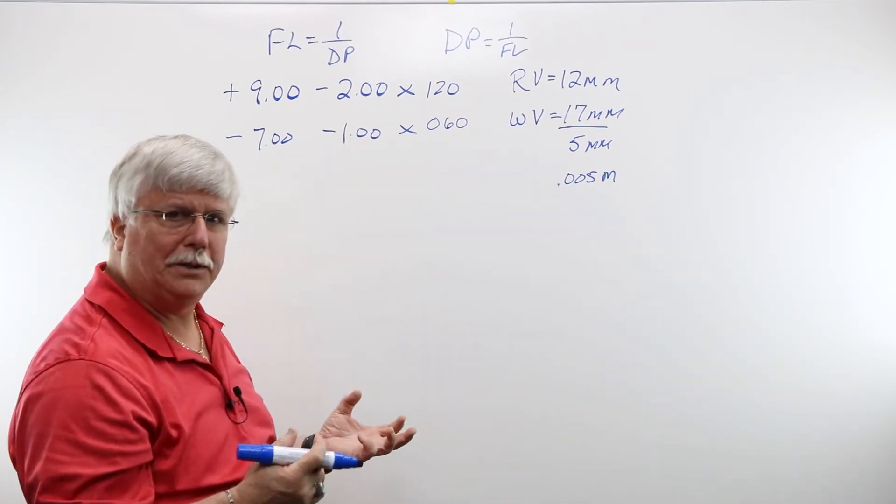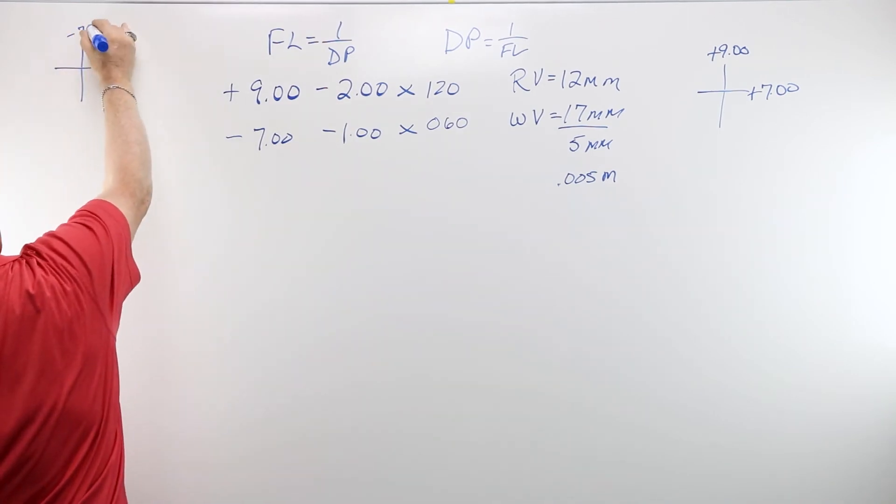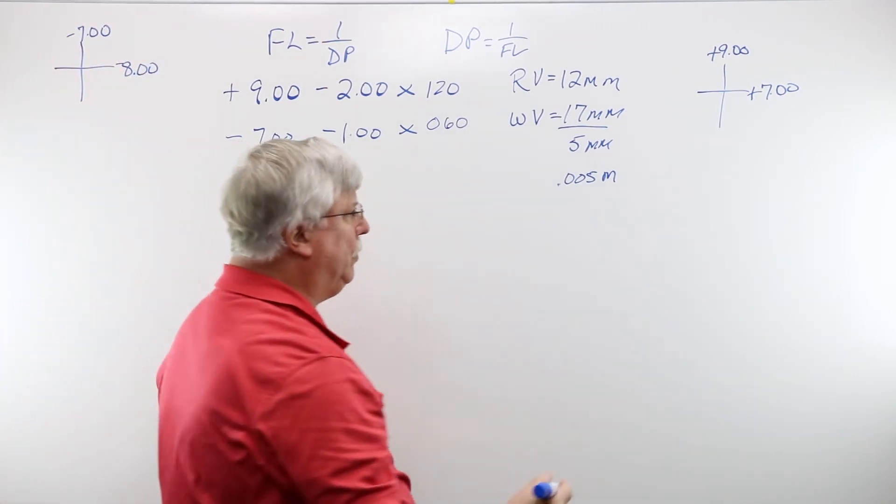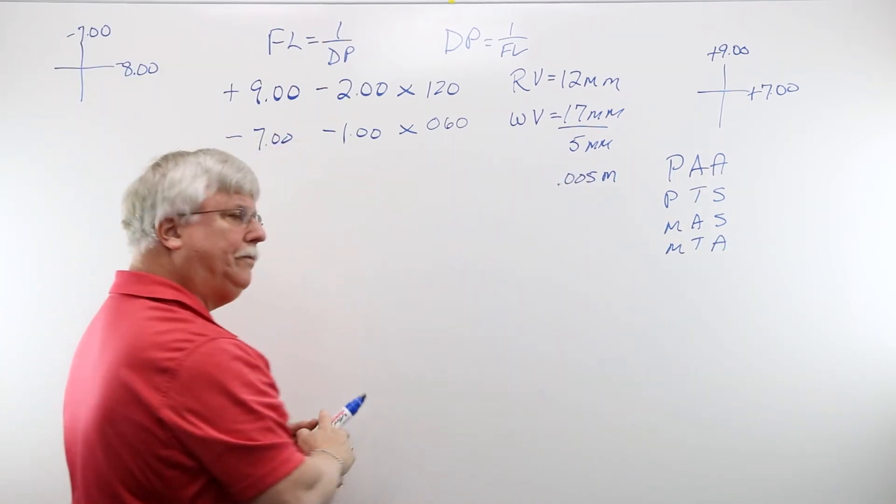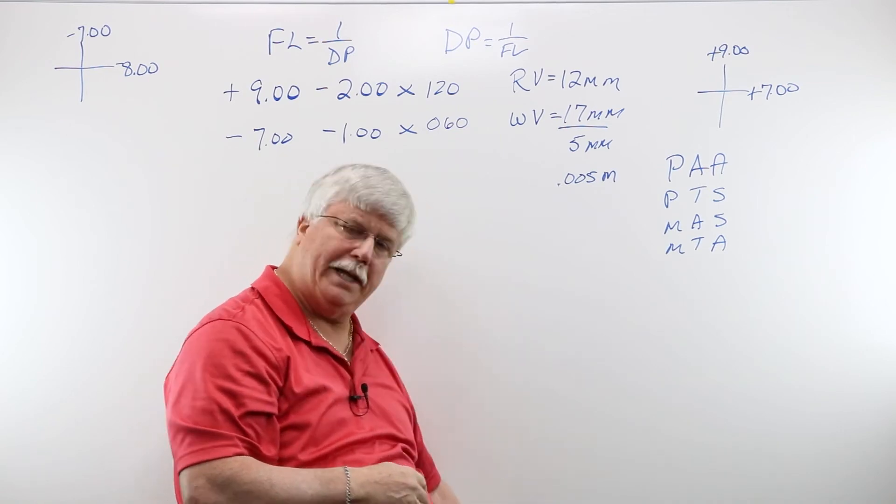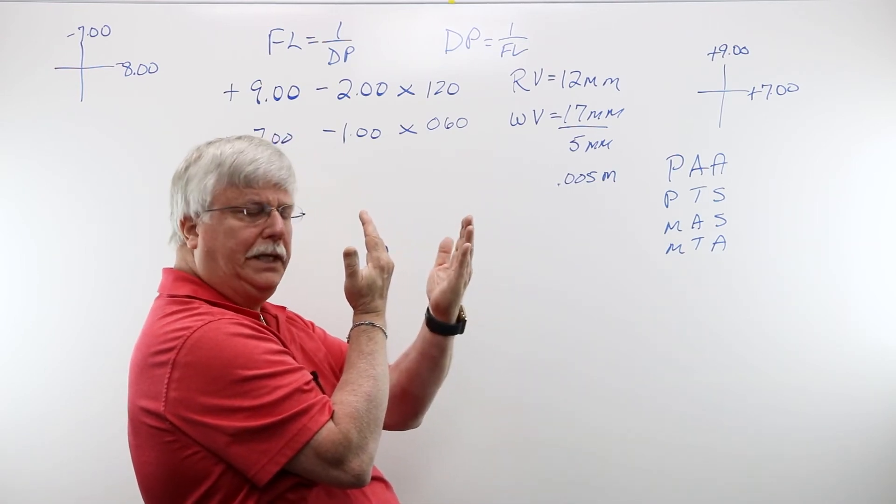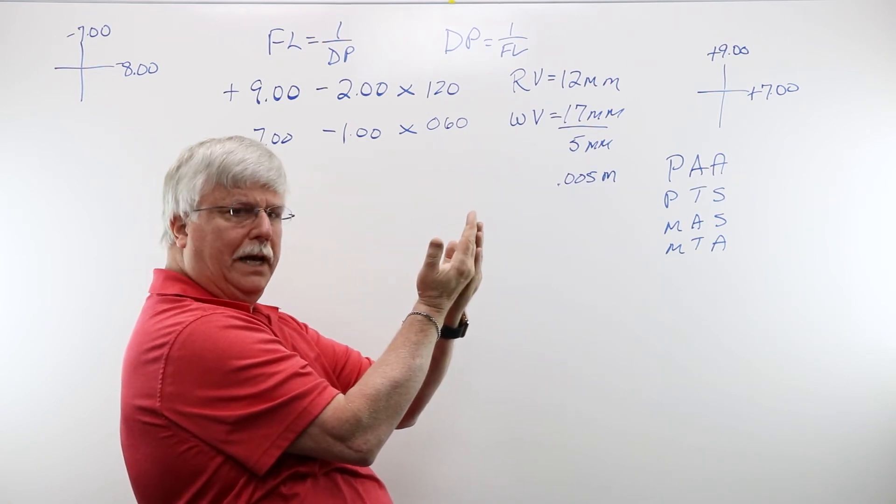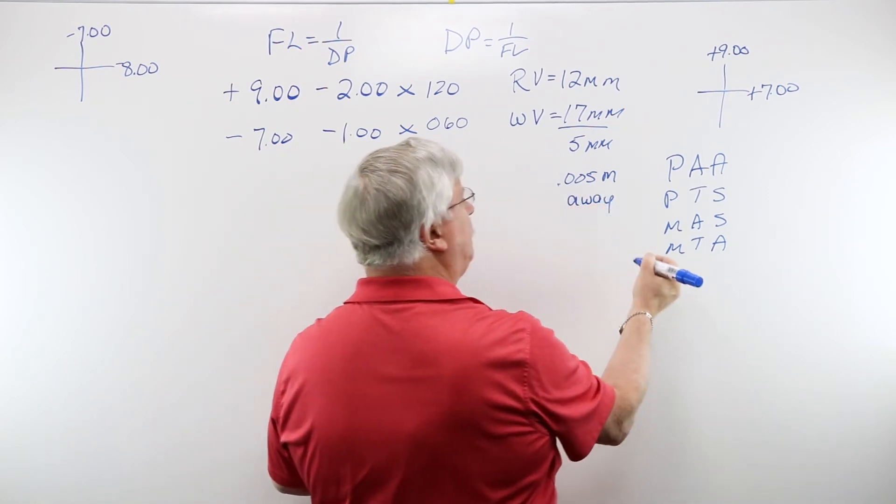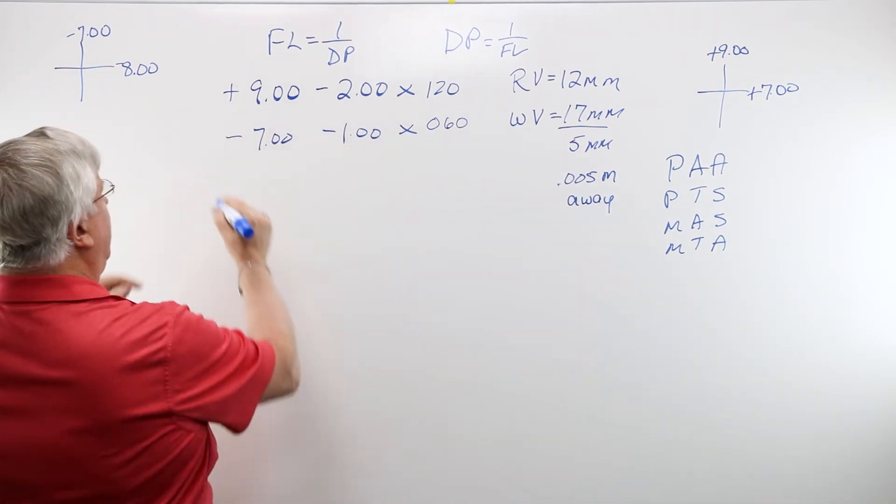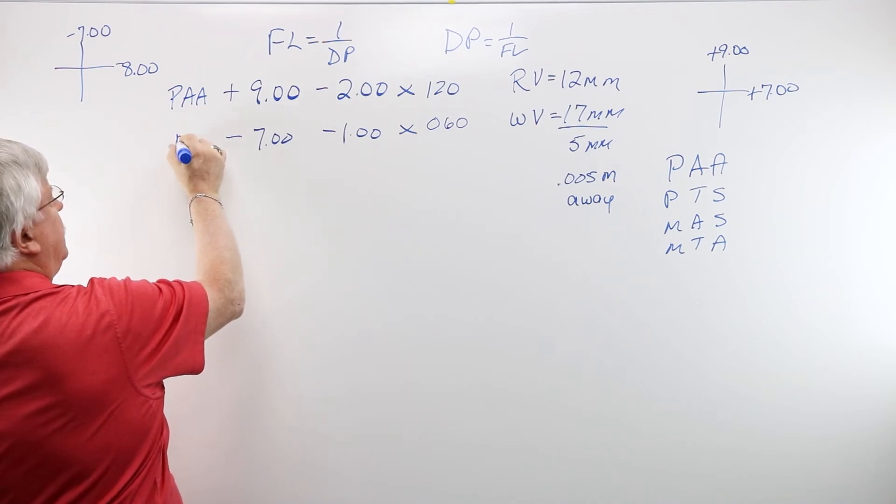Now we have to find the powers on the major meridians. Am I going away from the eye or towards the eye? The way you determine that is you go from the refracting vertex, which is 12 millimeters, to the wearing vertex, which is 17. So in order to get there, I have to go away from the eye. So I'm 5 millimeters away. For my right eye, which is plus, I'm going to add. Plus away, add. And for the left eye, it's minus. So minus away, subtract.